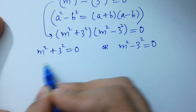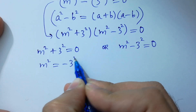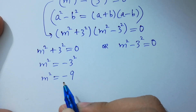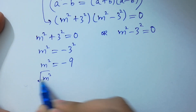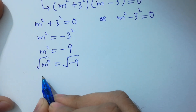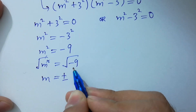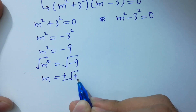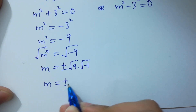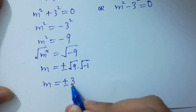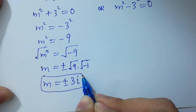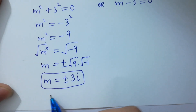Either m squared plus 3 squared equals 0, or m squared minus 3 squared equals 0. From the first case, m squared equals minus 9. Taking square root on both sides, m equals plus or minus square root of minus 9, which gives plus or minus 3i. This is our complex solution.